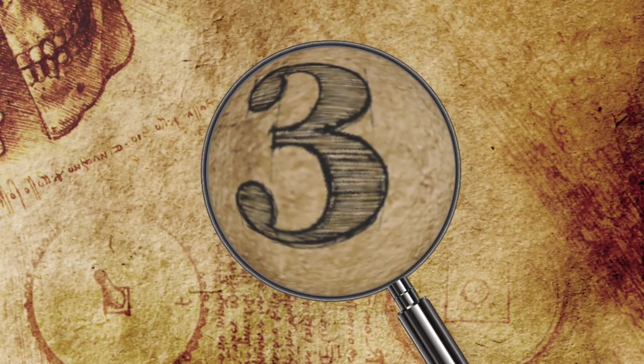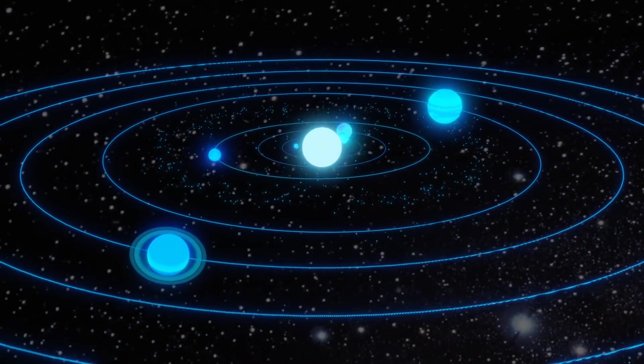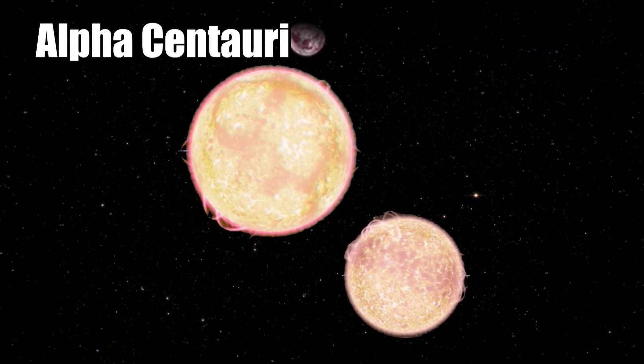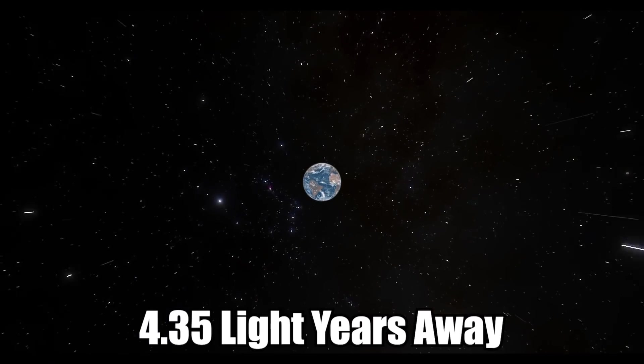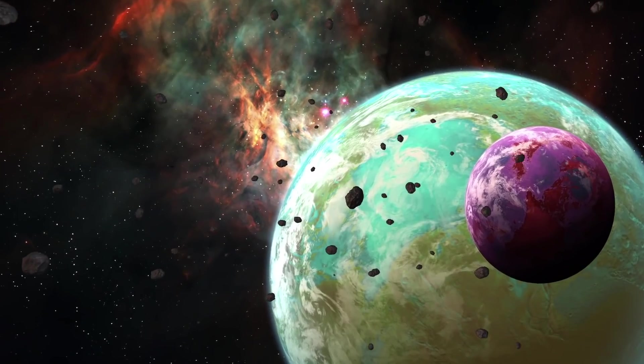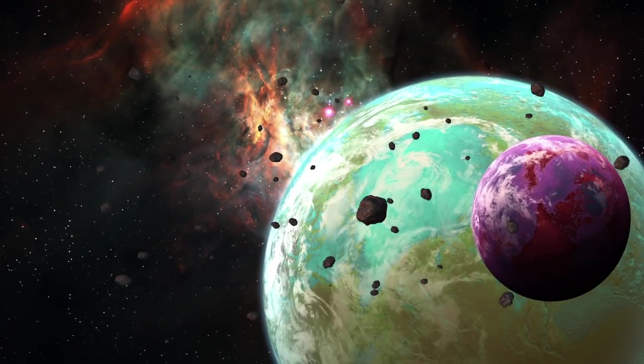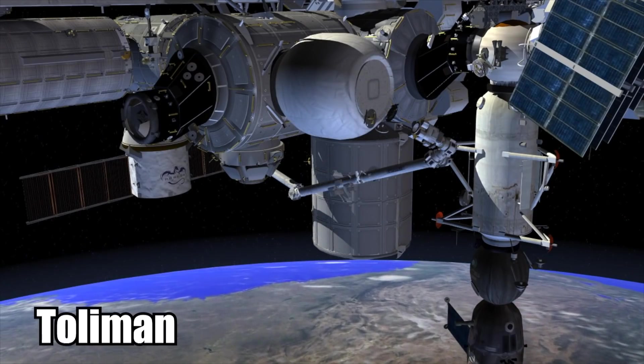Searching for Life on Alpha Centauri. The closest star to our solar system, other than the sun of course, is called Alpha Centauri. It's actually a triple star system, and it's located just 4.35 light years away from us. Scientists recently announced plans to search for habitable planets within Alpha Centauri as part of a space telescope mission called Toleman.